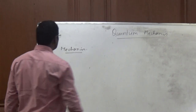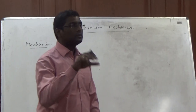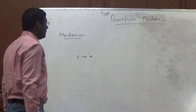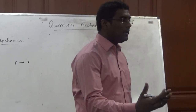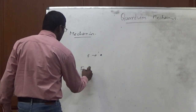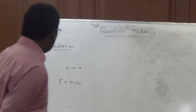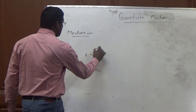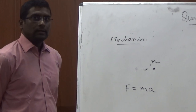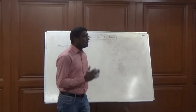Mechanics deals with the behavior of a particle or object when we apply force on it. If there is an object and we apply a force, you can tell after a certain time what will be the future of the particle or object. This was calculated by Newton: force is equal to mass into acceleration, where M is the mass of the object and a is the acceleration.